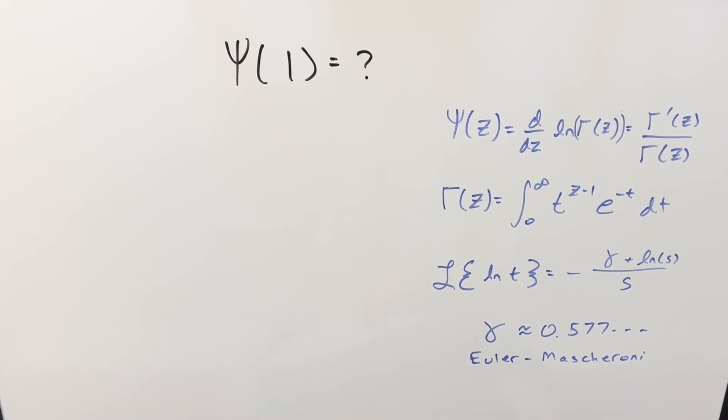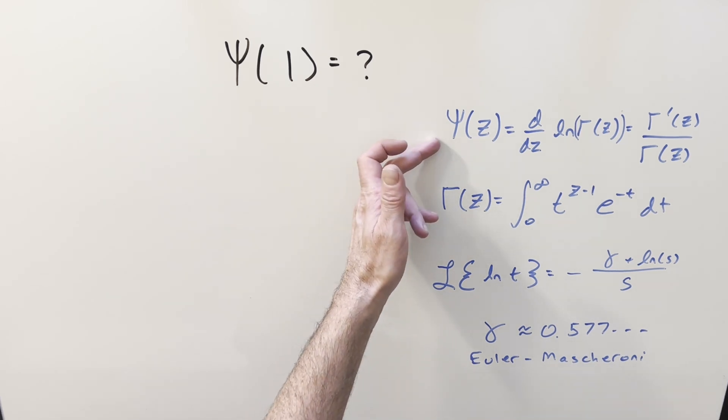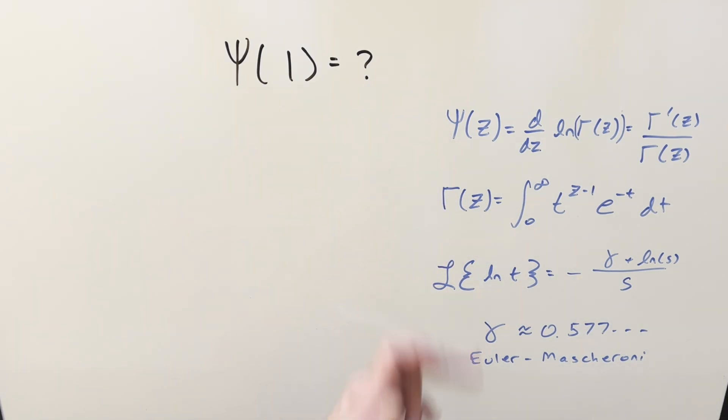Okay, we have something interesting here today. We want to find the digamma function at one, just using what we have over here to the right. We've got the definition for the digamma function up top here in terms of the derivative of the natural log of the gamma function, and we have our definition for the gamma function in terms of an integral.